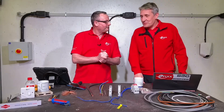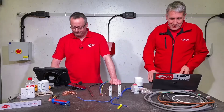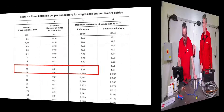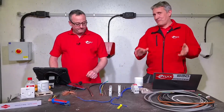If we return to our standard, for that 16mm class 6 conductor the maximum strand diameter is 0.21mm each. Again, it doesn't define how many strands make up that conductor, but it does define the maximum resistance.